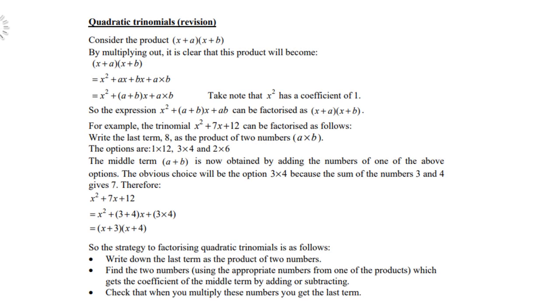Quadratic Trinomials. Consider the product (x + a)(x + b). Now by multiplying out, it is clear that this product will become x² + ax + bx + ab.